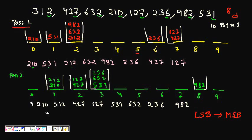In Pass 1: 312 has last digit 2, so it goes into bin 2. 427 has last digit 7, so it goes into bin 7. 632 has last digit 2, so it goes into bin 2. 210 has last digit 0, 127 has last digit 7, 236 goes into bin 6, 982 goes into bin 2, and 531 has last digit 1. So we have placed all numbers into bins according to their LSB.